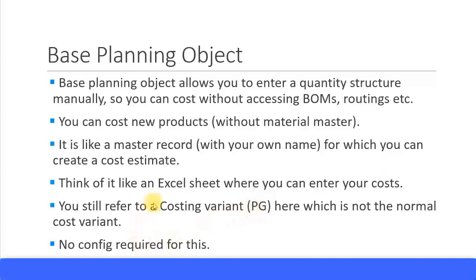The base planning object has its own costing variant called PG. This is not the normal costing variant we configured earlier — it is the base planning object's own default costing variant and requires no configuration. The base planning object functions like master data, so no pre-configuration is needed. You can go straight into the SAP access menu and create as many base planning objects as you want.